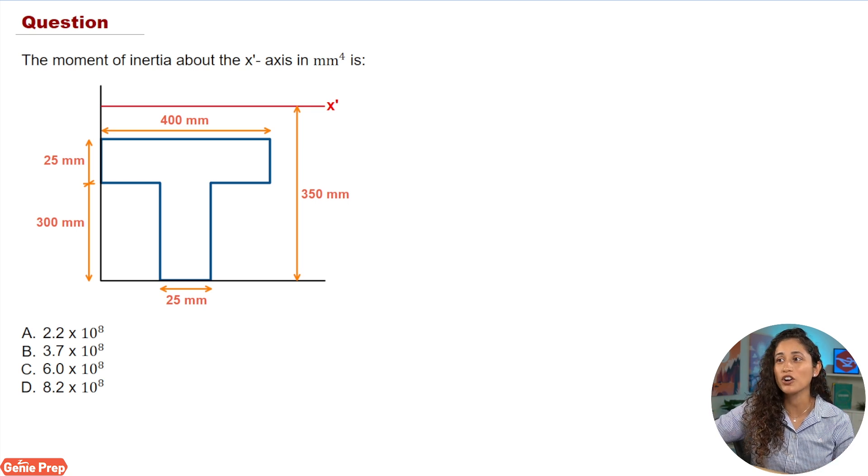Okay guys, so in this problem, we are given this shape here. We are also given X prime, right? So X prime is at 350 millimeters from the X axis, and we want to find the moment of inertia about the X prime axis. The first thing you got to do is split the shape into two shapes.